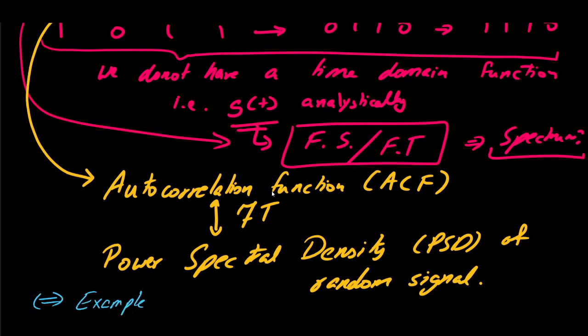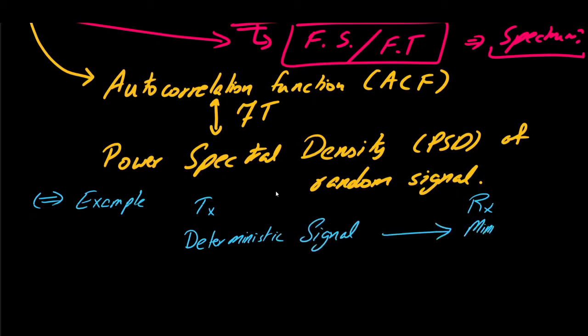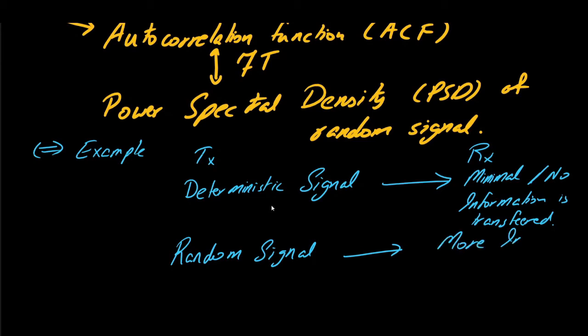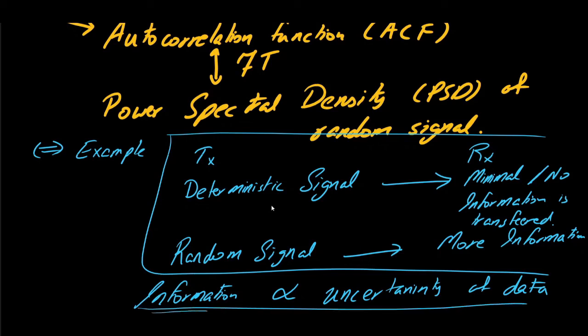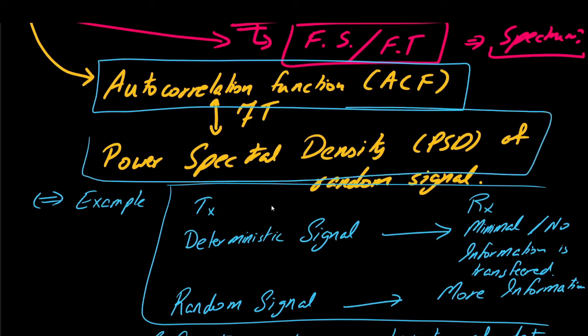Again consider the example that we have a transmitter and a receiver. If we are sending a deterministic signal, this means that minimal or no information is transferred. But on the other hand, if we are sending a random signal, basically we are transmitting more information. We can summarize this and say that the amount of information is directly proportional with the uncertainty of data. More uncertain the data is, the more information that a given system is capable of transmitting. Therefore autocorrelation function and power spectral density are of fundamental importance in communication systems.